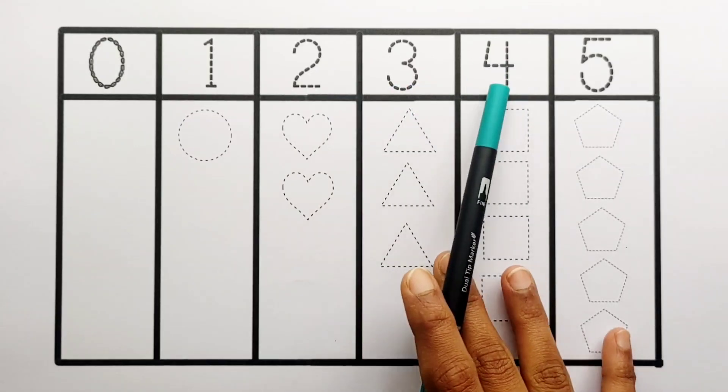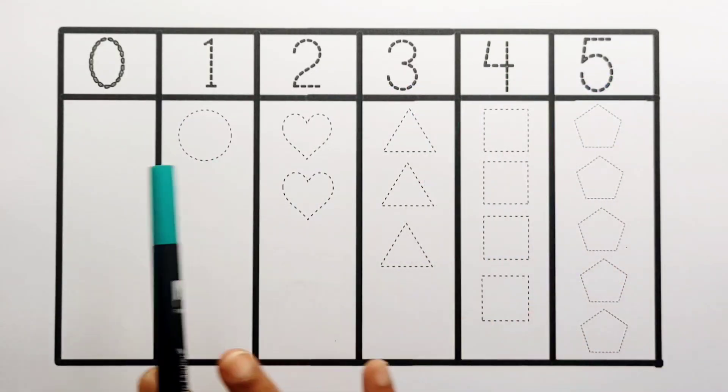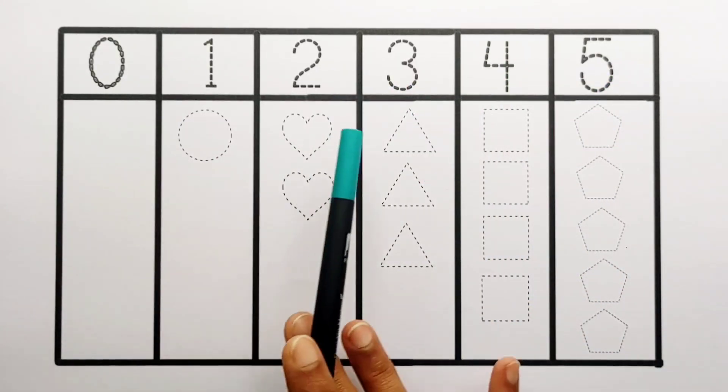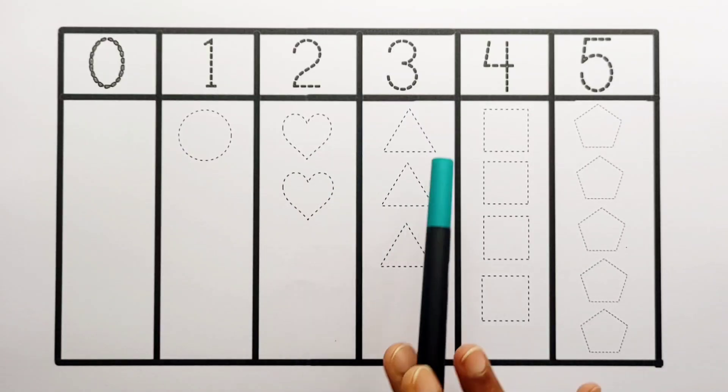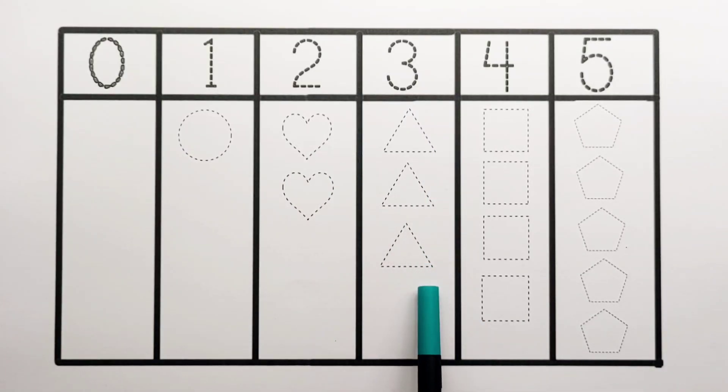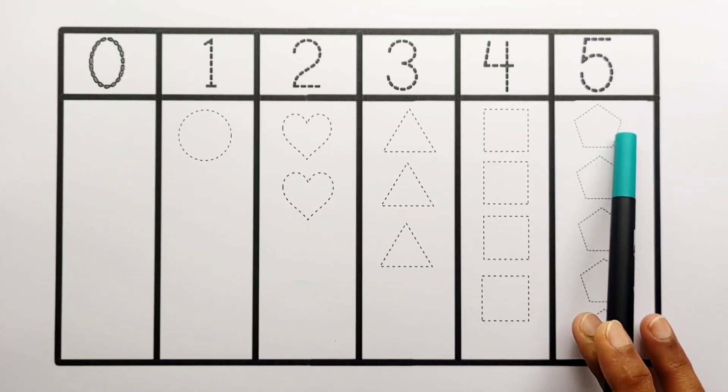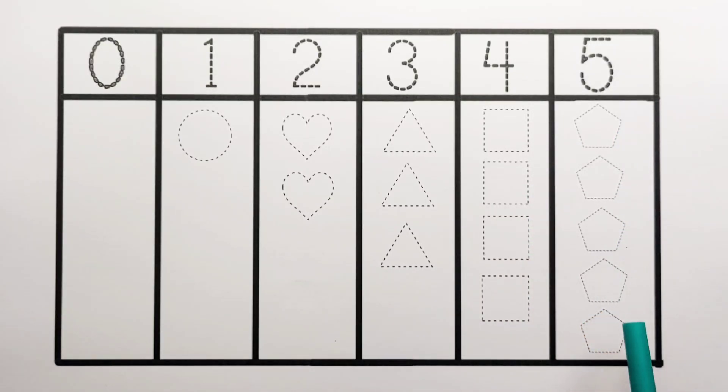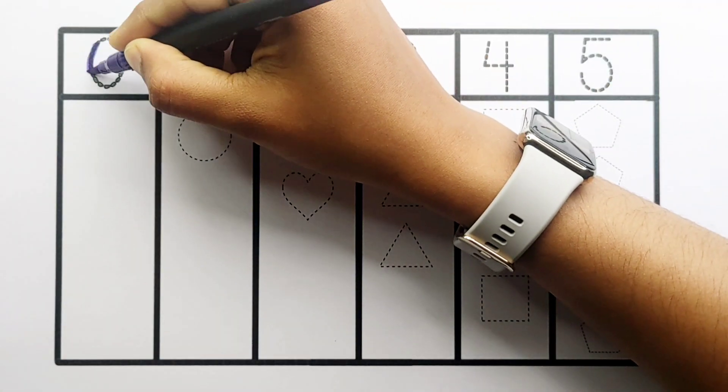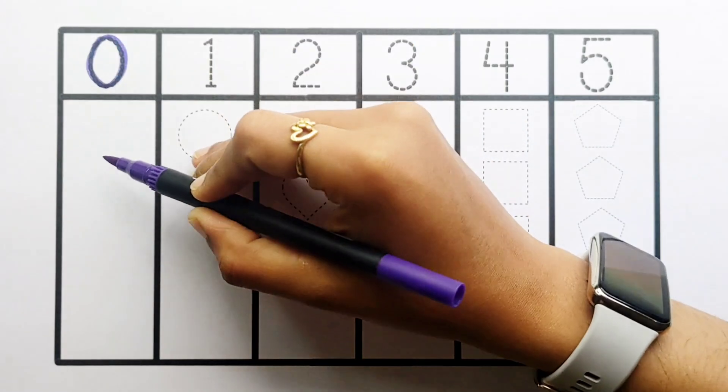2, 3, 4, 5. 0, 1 circle, 2 hearts 1, 2. 3 triangles 1, 2, 3. 4 squares 1, 2, 3, 4. 5 pentagons 1, 2, 3, 4, 5. 0 shapes.